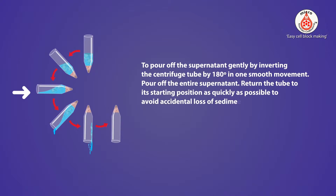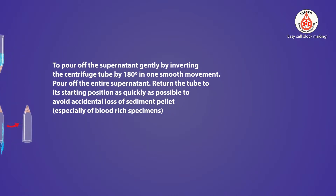To pour off the supernatant gently, invert the centrifuge tube 180 degrees in one smooth movement to pour off the entire supernatant. Return the tube to its starting position as quickly as possible to avoid accidental loss of the sediment pellet, especially for blood-rich specimens.